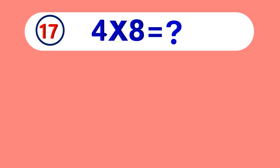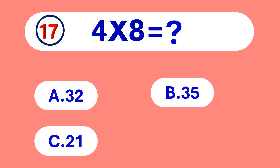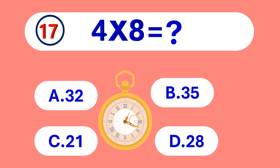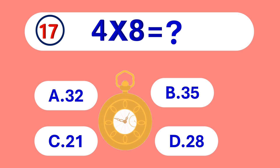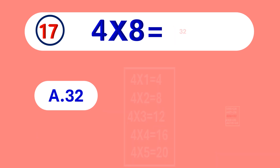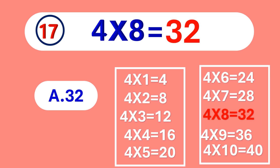4 times 8 is equal to... 32. 4 times 8 is 32.